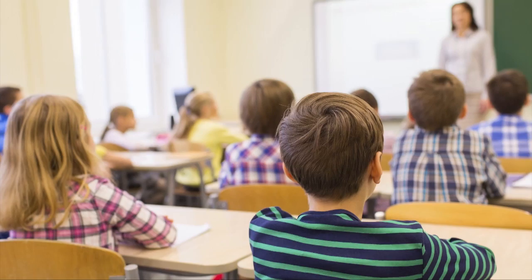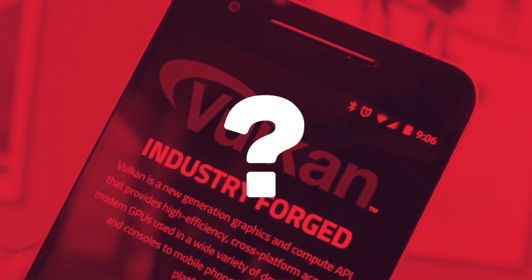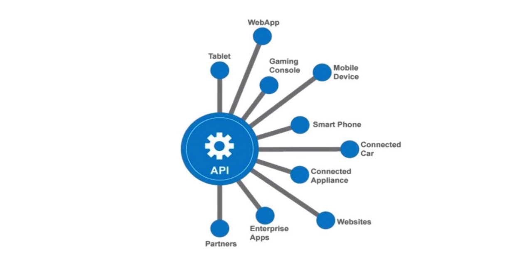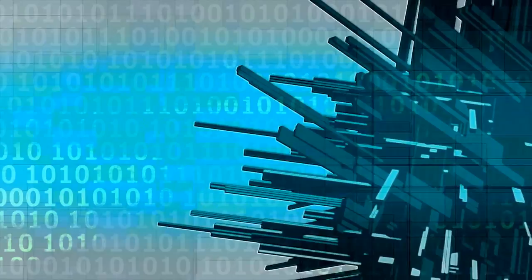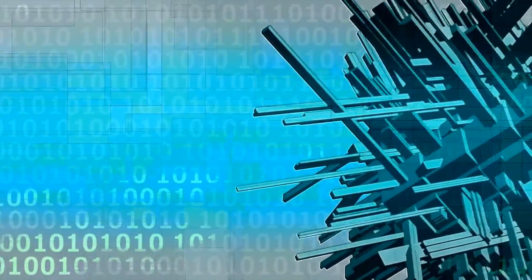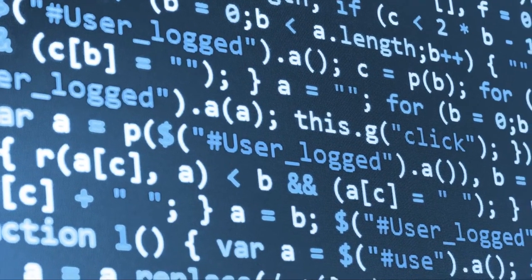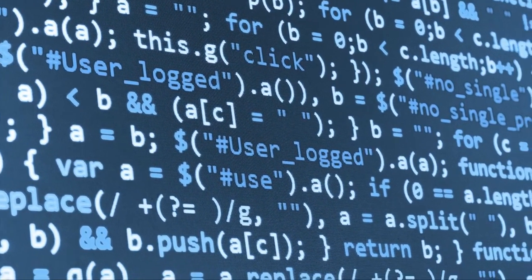To understand what Vulkan or even DirectX 12 are, you need to know what an application programming interface is. An API is a set of protocols and tools for building software applications. Pretty much everything has to use an API of some kind. If nobody used APIs, nothing would get done, because everybody would be writing everything — every single call to every single possible function would have to be rewritten for every single program or game.